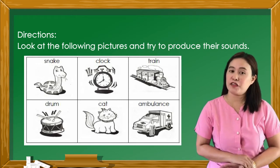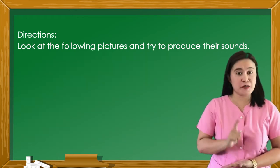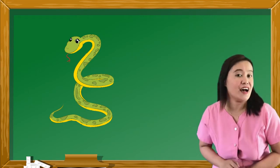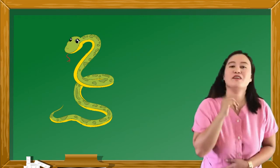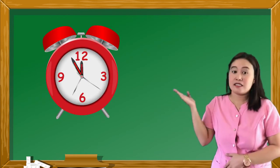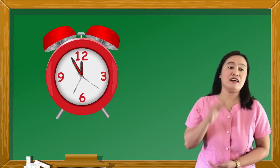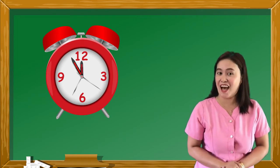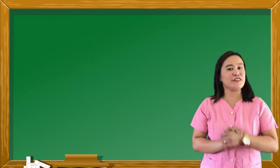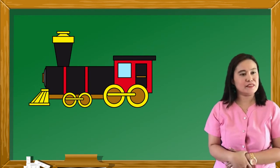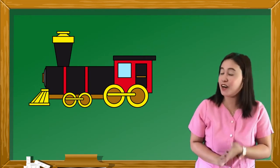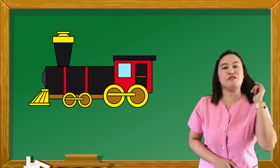Now, let's go over with your answers. The first picture is a snake and the snake sounds very good. Now, how about the second picture? The second picture is a clap and the clap sounds... That's great! Now, the next picture is a train and the train sounds... Very good!